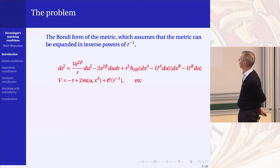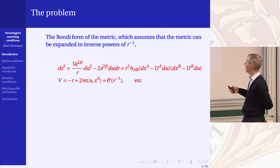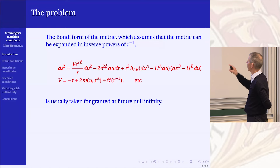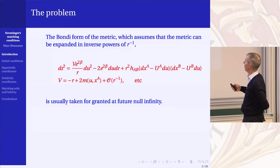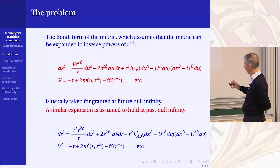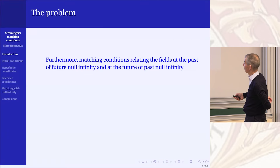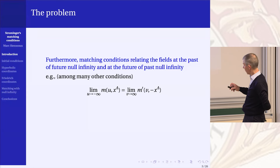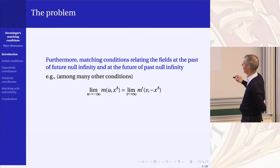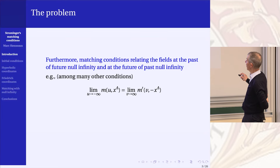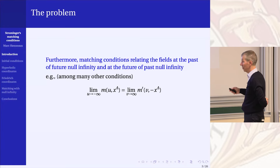Let me make the question more explicit. If you consider the boundary form of the metric at future null infinity, one usually assumes such an expansion. I will argue that extra terms have to be included later, but let's not discuss that now. One takes a similar expansion at past null infinity, and one assumes some connection between this coefficient m here and this coefficient m here.